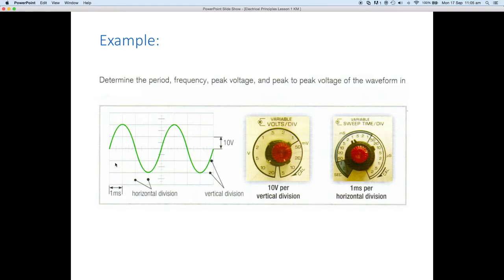Now we look on the horizontal and we've got one, two, three, four divisions. Do you notice that? So from here one, two, three, four divisions. We go over and look at our sweep and it tells us that every one's division is worth one millisecond. So if we've got four divisions we've got four milliseconds. So our period is four milliseconds.